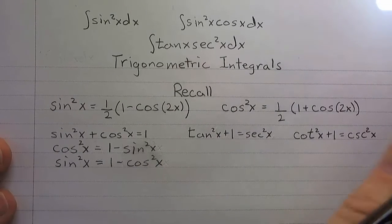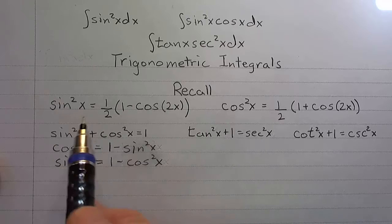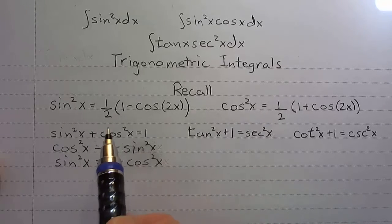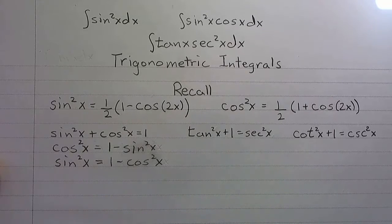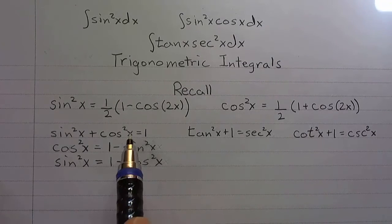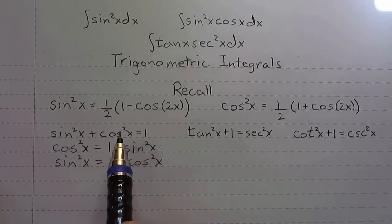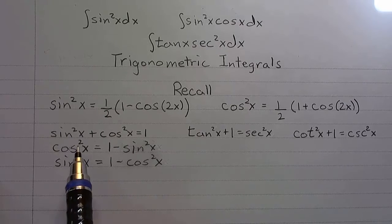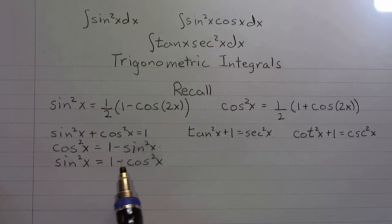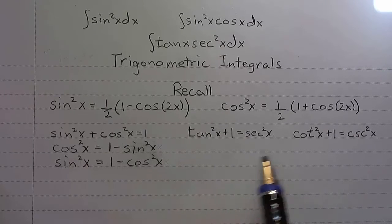The key to dealing with trigonometric integrals is trigonometric identities. In particular, there are the power-reducing identities for sine and cosine — you need to be familiar with those. Here's the power-reducing formula for sine, the power-reducing formula for cosine, and remember the Pythagorean identities: sine squared x plus cosine squared x equals one, and the alternative forms. Also remember the Pythagorean identities for tangent and secant. These are the identities you need to have in mind.